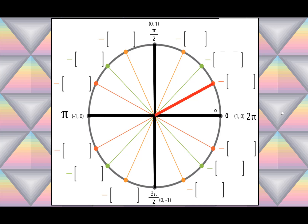Let's take a closer look at the first quadrant. This angle is π/6, halfway between 0 and π/2 is π/4, and this angle is π/3. All the x-y points except the ones on the axes have a denominator of 2, so we can fill that in right now. The easiest one to remember is that π/4 has the same x and y value, which is √2/2. At π/6 and π/3, our values are 1/2 and √3/2.